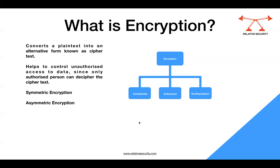There are two types of encryption: symmetric encryption and asymmetric encryption. In symmetric encryption, you have a single key with which you encrypt the data, and you share that same key with the other person so they can decrypt it. Anybody who has that key is an authorized person — there is no confidentiality from that person, and they cannot deny accessing the data because they have the key.